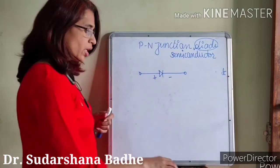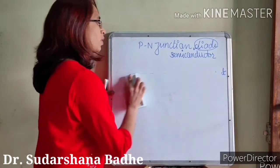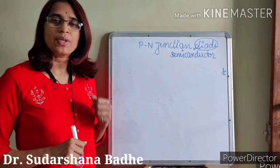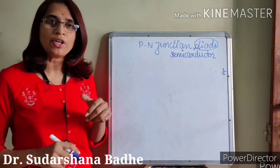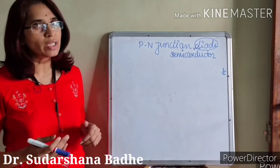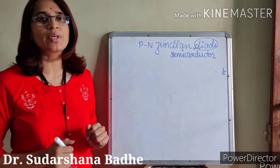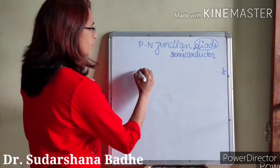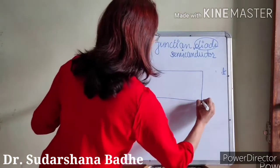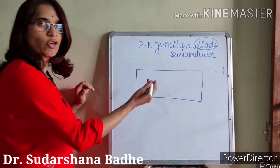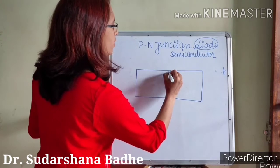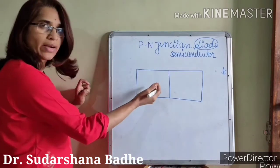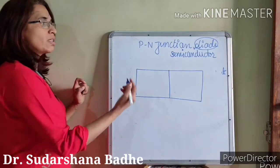Let us see the formation of the PN junction diode. To get P and N type semiconductors we have to add some impurity — that is pentavalent impurity and trivalent impurity — into the intrinsic type of semiconductor. So let us take a crystal of intrinsic type of semiconductor. This is the crystal of intrinsic semiconductor; this is the junction.